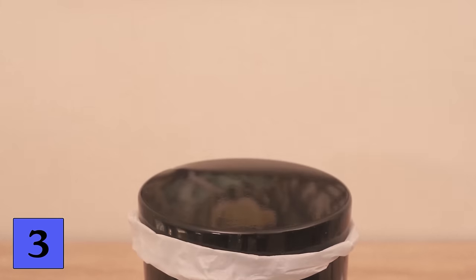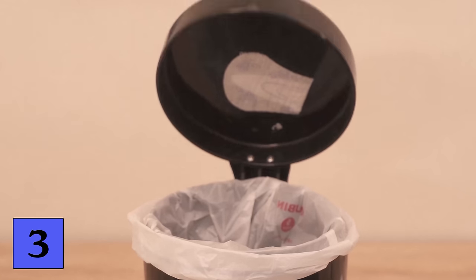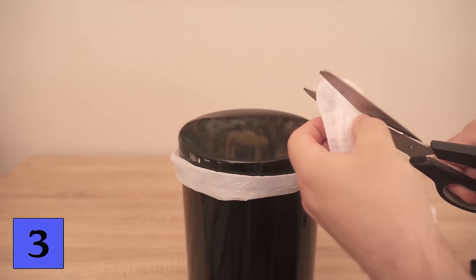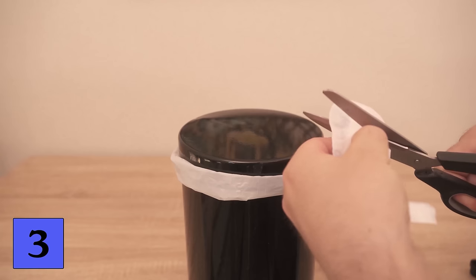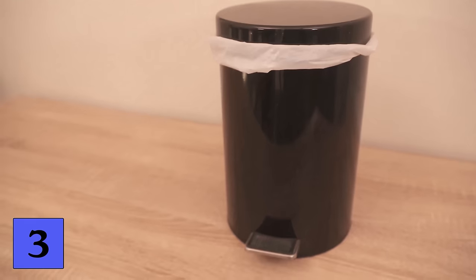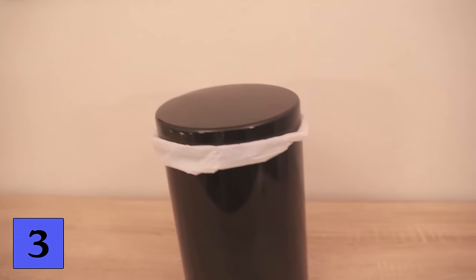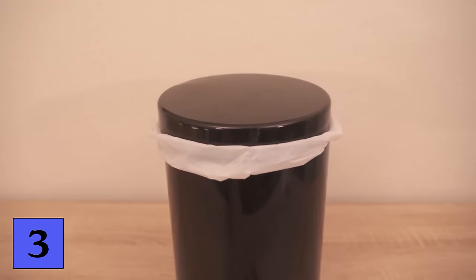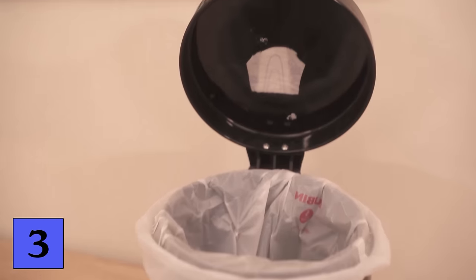We now stick the panty liner in the bin under the lid where no one can see it straight away. You can also stick it somewhere else, for example in the bag itself or under the bag. You can also cut the panty liner a little bit more so that you can no longer see that it used to be a panty liner. You can also just cut out a circle and stick it somewhere. So if you want to do something about your stinky bin, try this trick out for yourself.